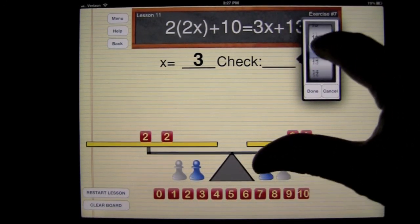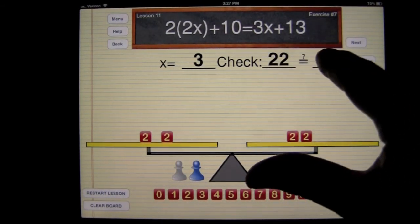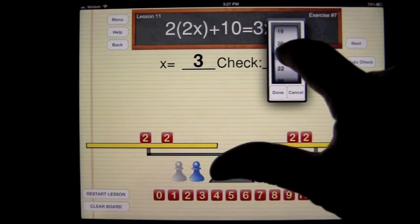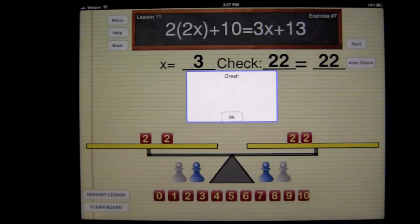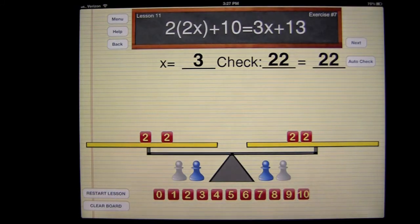And we'll go ahead and put our answer there. And once we do that, again, we're going to check it to make sure we're right. Scroll there, tap there, and then tap in here again. And if you're right, you're going to get the trumpet sound, which means you've solved it correctly.